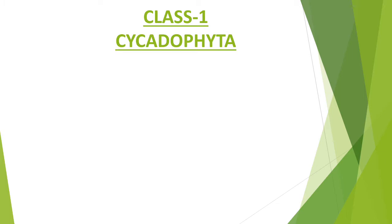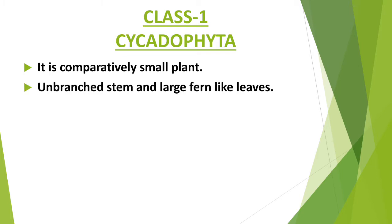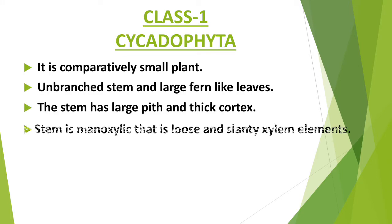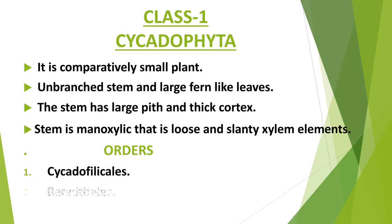Class Cycadophyta is a comparatively small plant with an unbranched stem and large fern-like leaves. The stem has large pits and thick cortex. The stem is monoxylic, that is, with loose and scattered xylem elements. It has three orders.